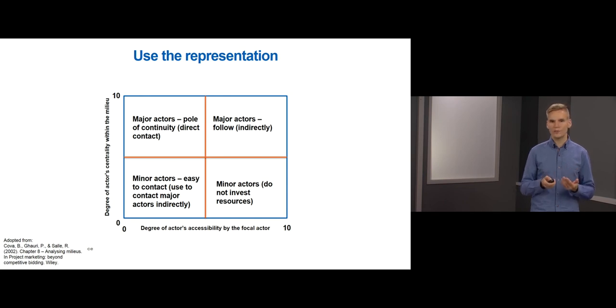Actors with low degree of centrality and low degree of accessibility are minor actors that are easy to contact. These are suitable actors that can be used to get into touch with the actors who had a key role but were hard to be in touch with. Lastly, actors with low degree of centrality but high degree of accessibility are not that important and resources should not be wasted on chasing them.